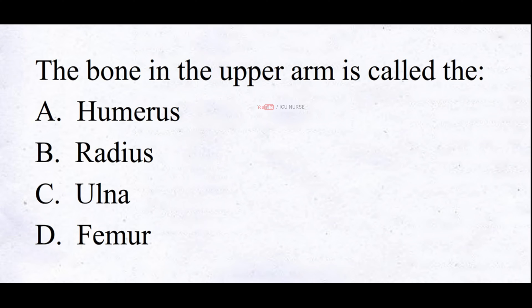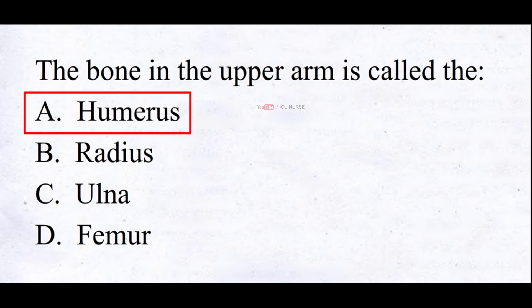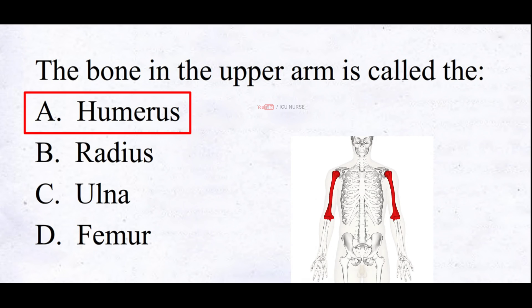The bone in the upper arm is called: A. Humerus, B. Radius, C. Ulna, D. Femur. And the correct answer is A. Humerus. The humerus is the bone that is found in the upper arm.